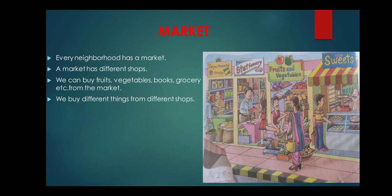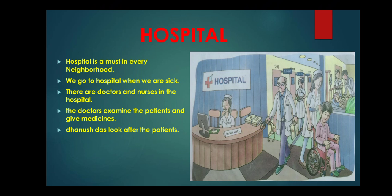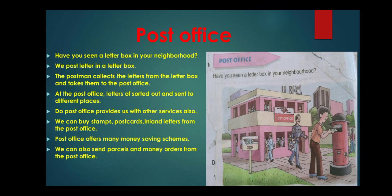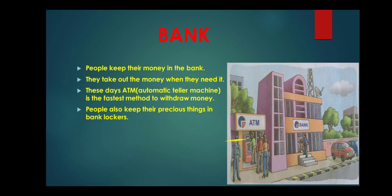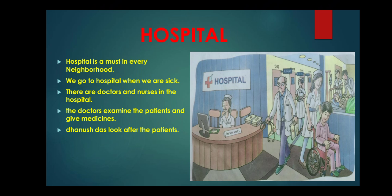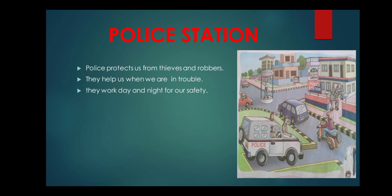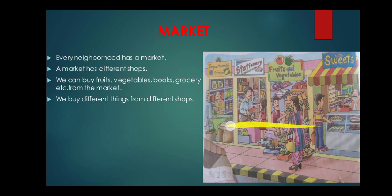So children, these are some important places needed to be in a neighborhood. This is all about neighborhood and its important places. To take a quick review: the first important place is a post office, second is a school, third is a bank, fourth is a hospital, fifth is a police station, and sixth is a market.